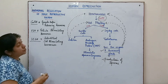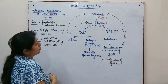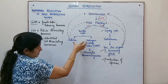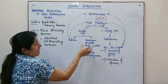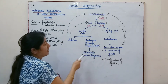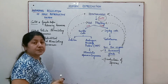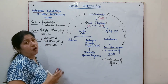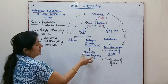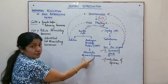The follicle stimulating hormone, FSH, acts on Sertoli cells. These Sertoli cells produce two types of proteins: inhibin and androgen binding protein, or ABP. This androgen binding protein helps in the concentration of androgens and stimulates the process of spermatogenesis.